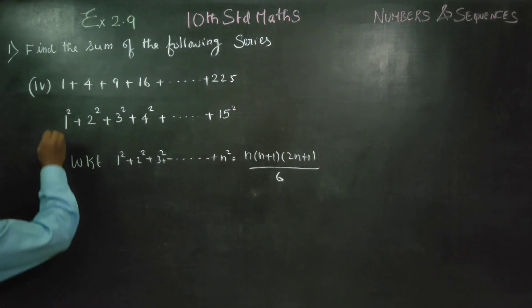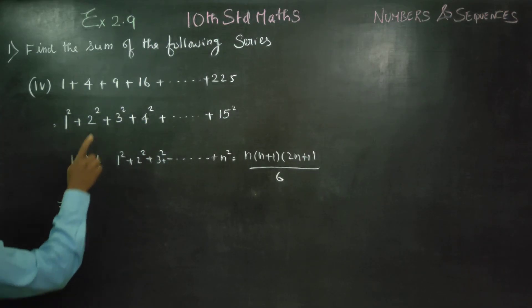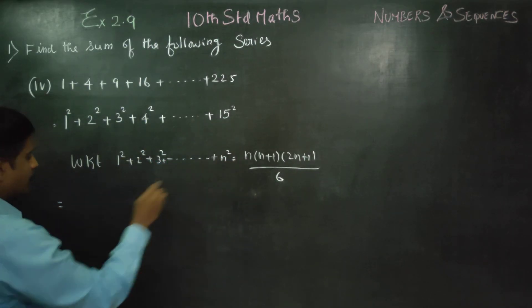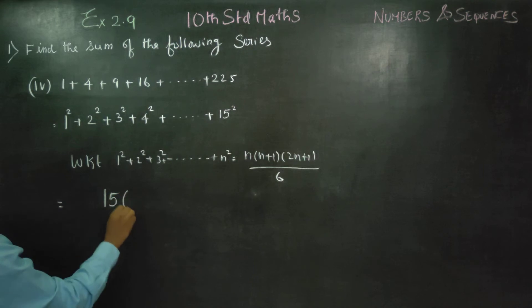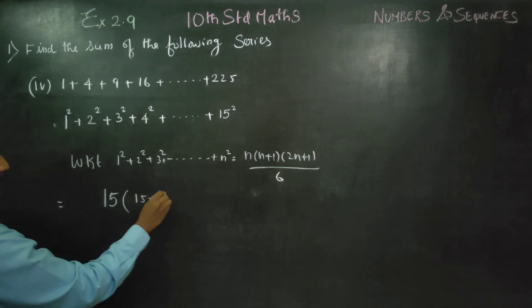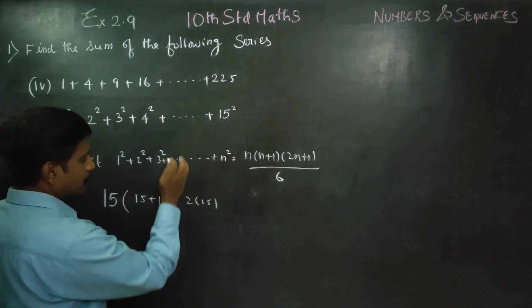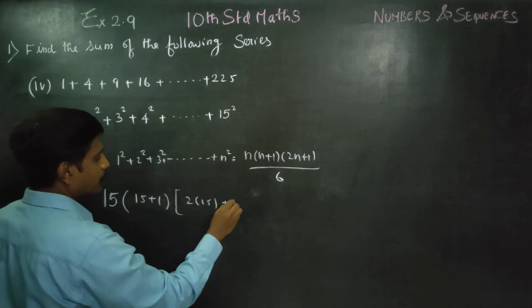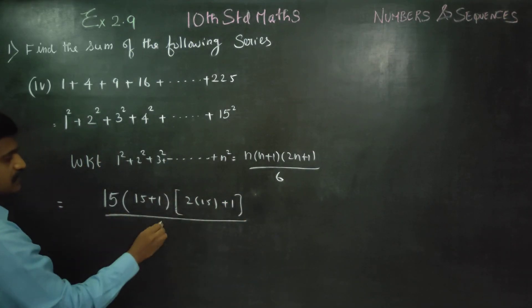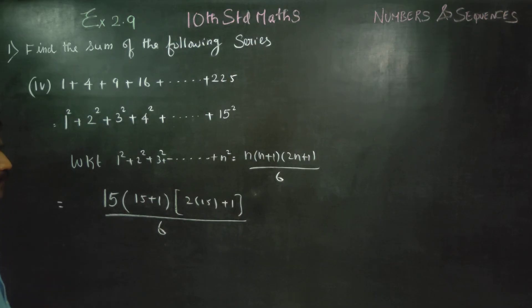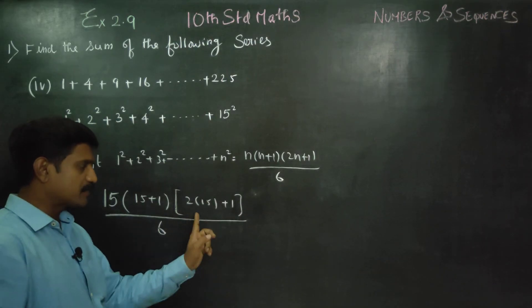So for this, n is 15. 15 into 15 plus 1, 2 into 15 plus 1 by 6.